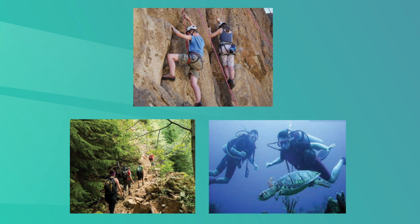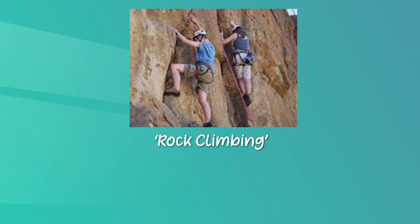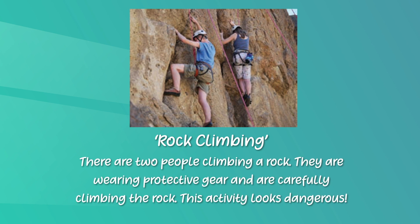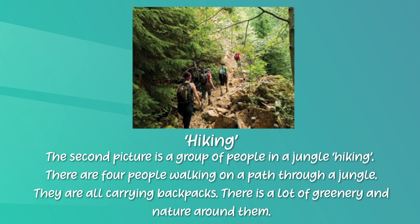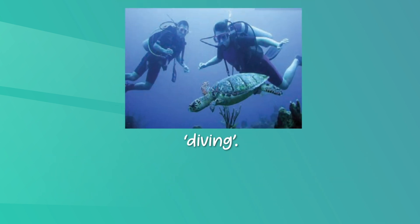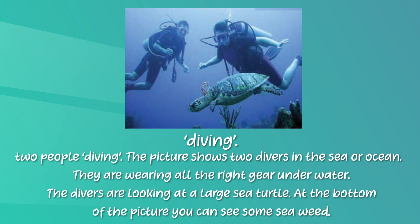Now turn to page 17 in your pupils' book, Unit 2, Activity 4. You are asked to write a description of each of these activities. The first activity is rock climbing: 'There are two people climbing a rock. They are wearing protective gear and are carefully climbing the rock. This activity looks dangerous.' The second picture shows a group of people hiking in a jungle: 'There are four people walking on a path through a jungle. They are all carrying backpacks. There is a lot of greenery and nature around them.' The third picture is of two people diving: 'The picture shows two divers in the sea or ocean. They are wearing all the right gear underwater. The divers are looking at a large sea turtle. At the bottom of the picture you can see some seaweed.'